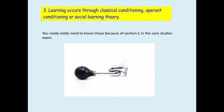The third and biggest principle is that learning occurs through classical conditioning, operant conditioning, or social learning theory. You really need to know about these three things — not least because in Section C of your exam you'll almost definitely be asked how to change somebody's behavior, and the answer involves conditioning or social learning theory. Knowing this means you've got a large part of the exam nailed.